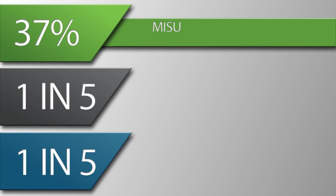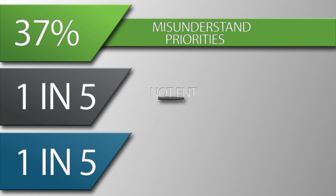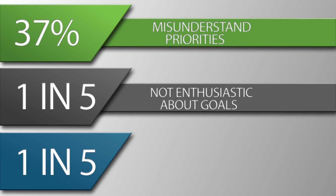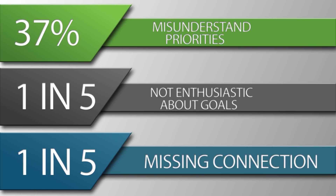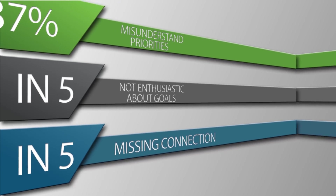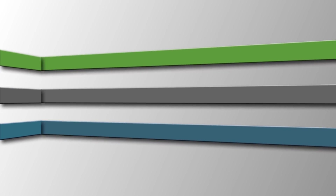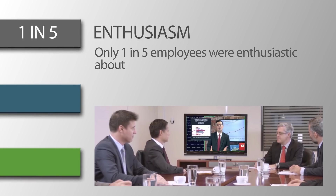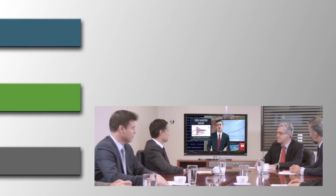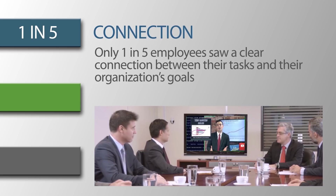A recent Harris Interactive poll of over 23,000 employees revealed that 37% of employees in key industries did not understand their company's priorities. Only one in five employees were enthusiastic about their organization's goals, and only one in five saw a clear connection between their tasks and their organization's goals.